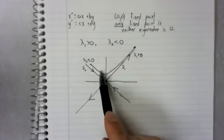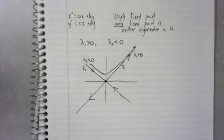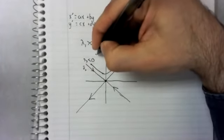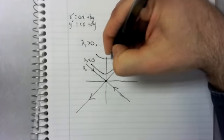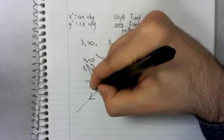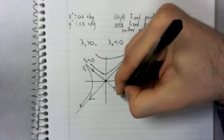So our trajectory looks like this. Likewise, for other initial conditions.